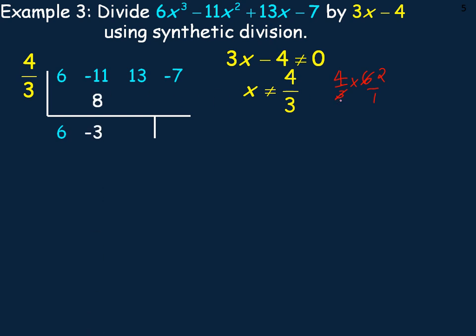We add the -11 to the 8 and get -3. Now I need to multiply 4/3 by that -3. The 3 goes into the -3 leaving -1, so 4 times -1 is -4, adding that to the 13 we get 9.